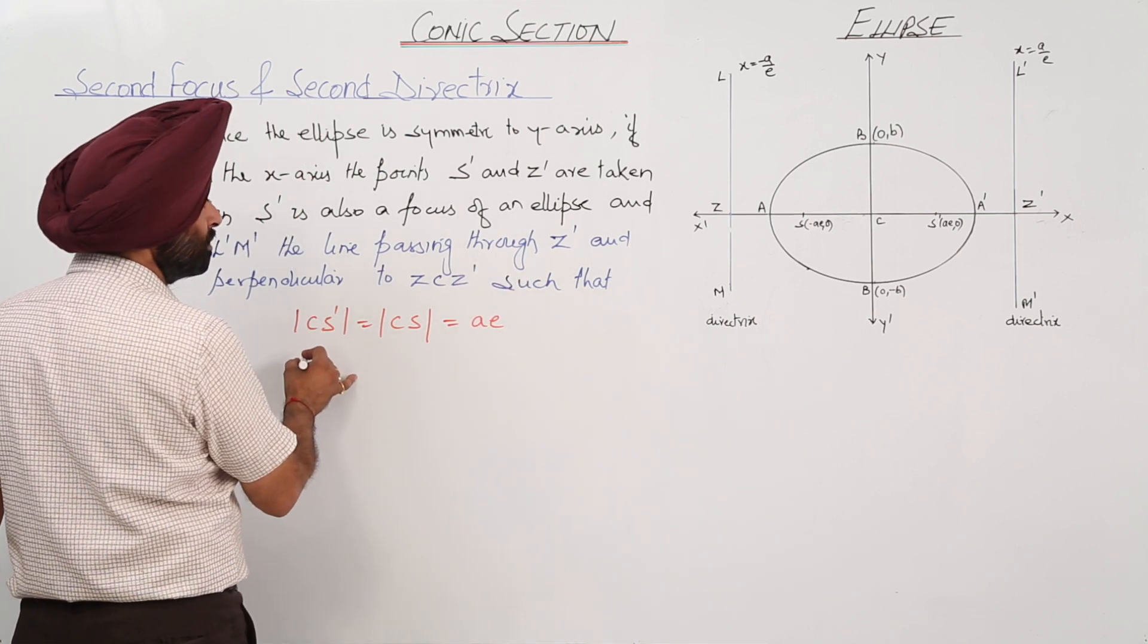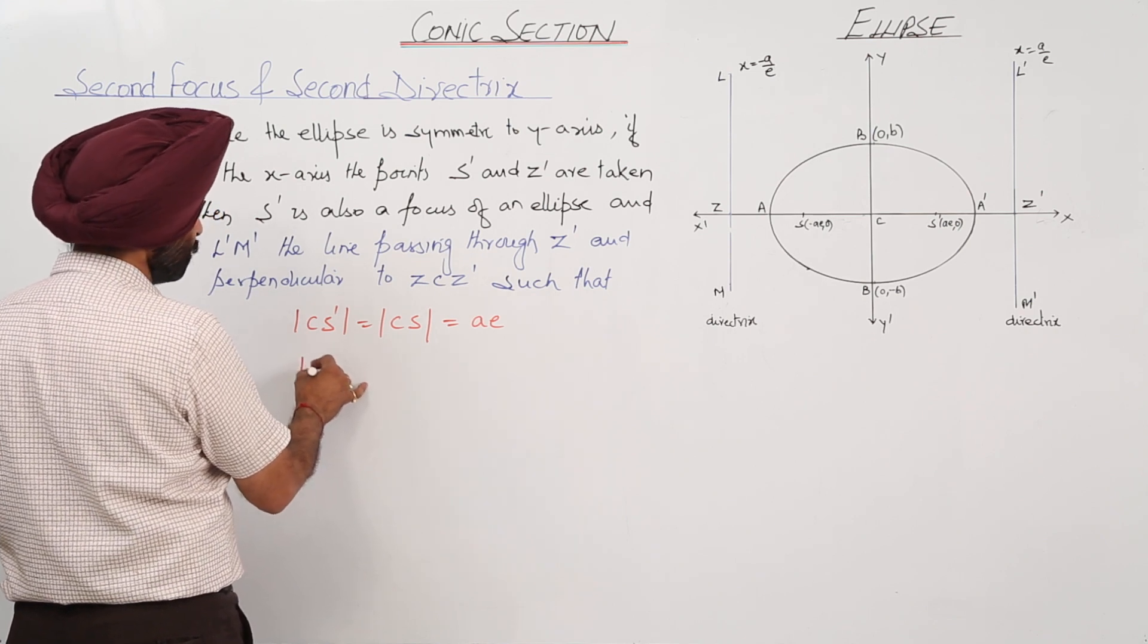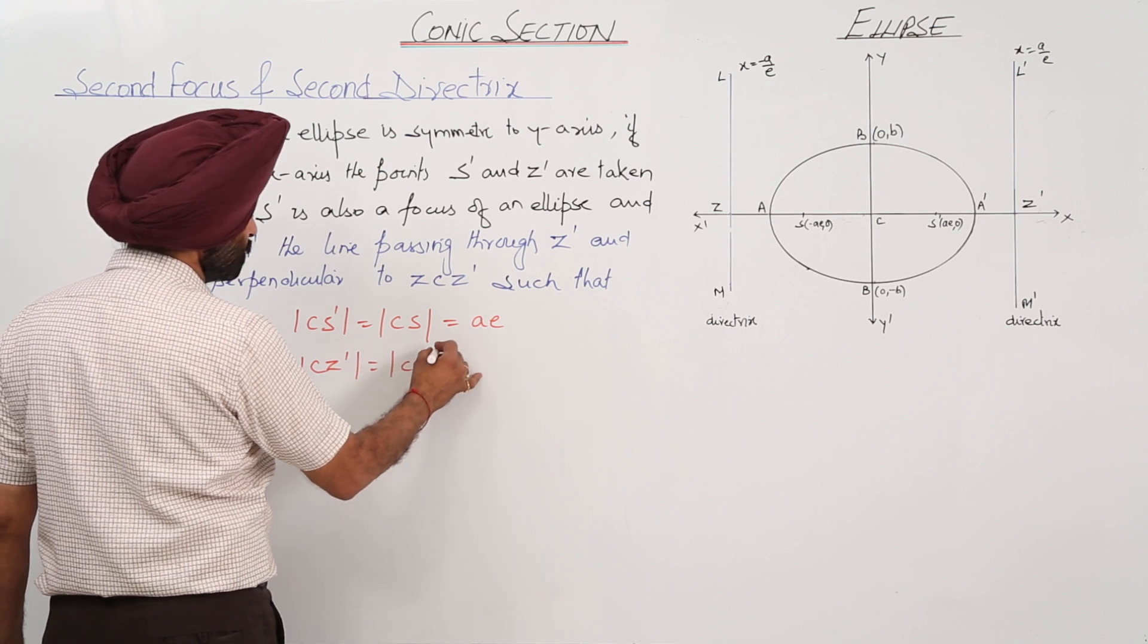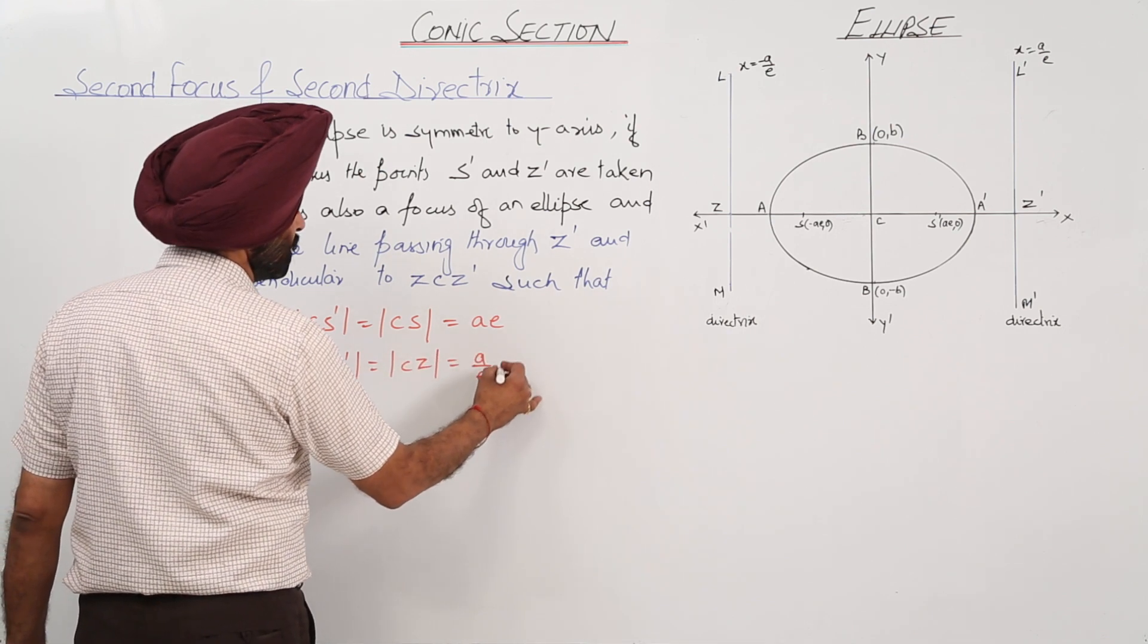We are having distance of CS dash is equal to Ae. And we are having distance of CZ dash is equal to distance of CZ is equal to A upon E.